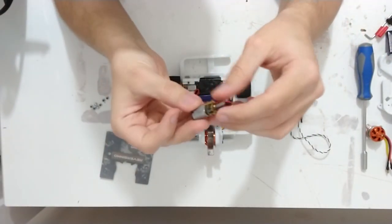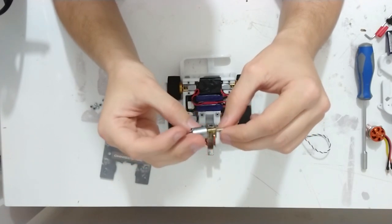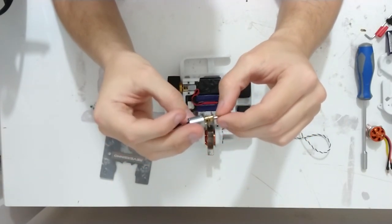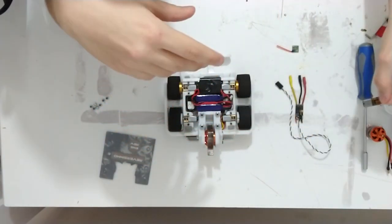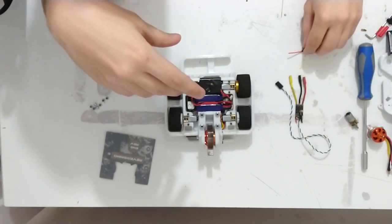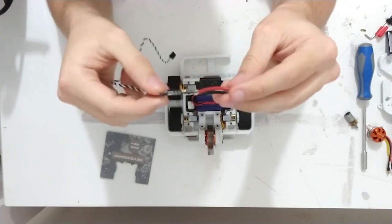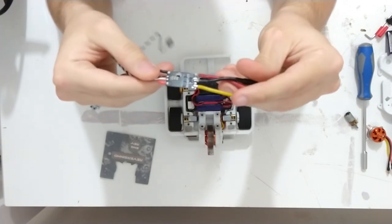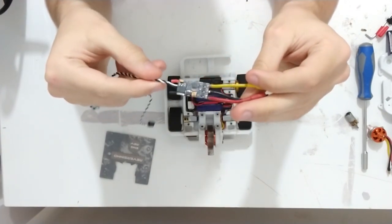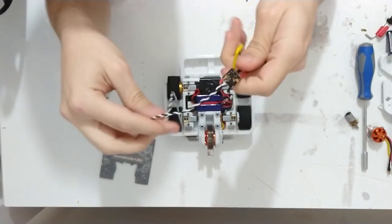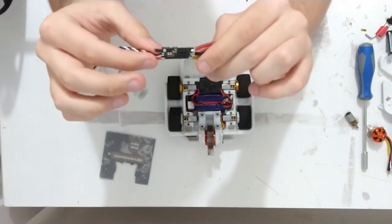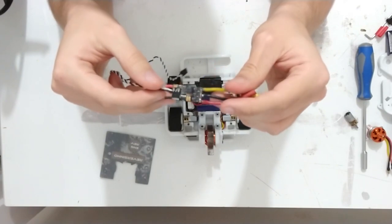It's 4 and 20 motors in 3:1 gear ratio. For the weapon ESC, it's this Spider Pro 30A. It's very tiny and didn't give me any problems.